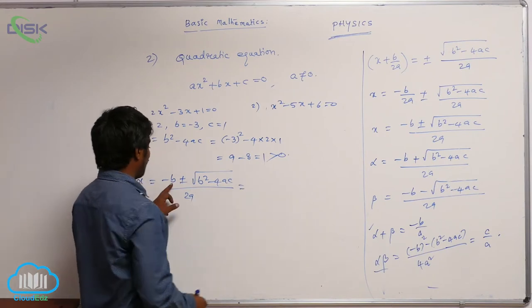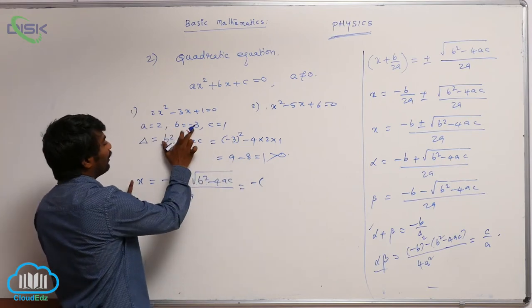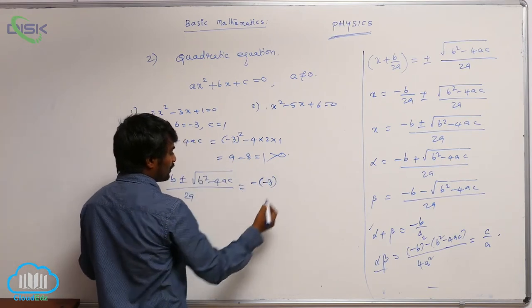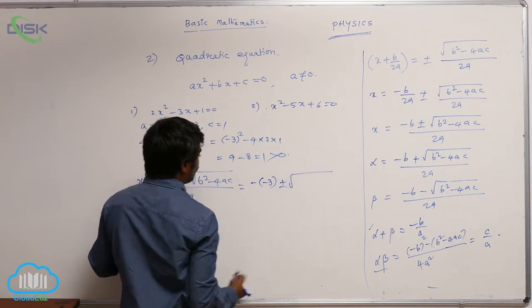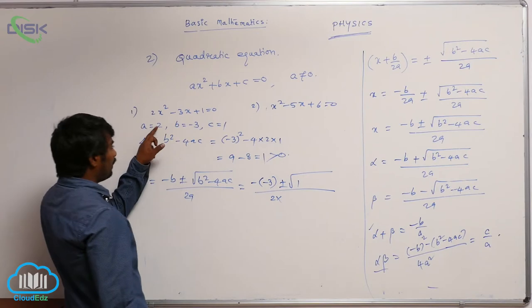That is equal to minus b, minus of b minus 3, minus minus plus. So under root of b square minus 4ac value is 1 by 2 into a, a is 2.